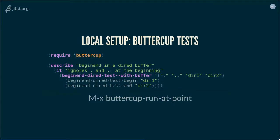Both frameworks are really good. I tend to use ERT most of the time because it's a bit simpler — it has fewer features, and it's the only one included inside Emacs, so if I write code that might be good for including in Emacs itself, I'd use ERT. Buttercup has plenty of features that I really like, such as spies and mocks. When I need those features, I'd use Buttercup.